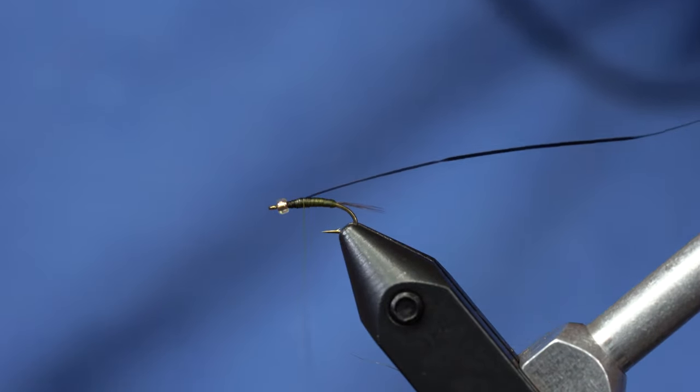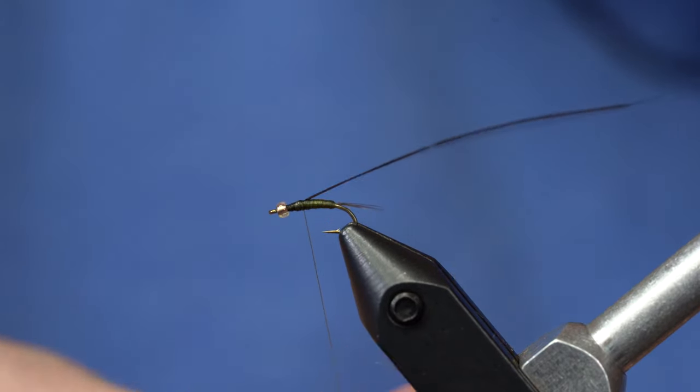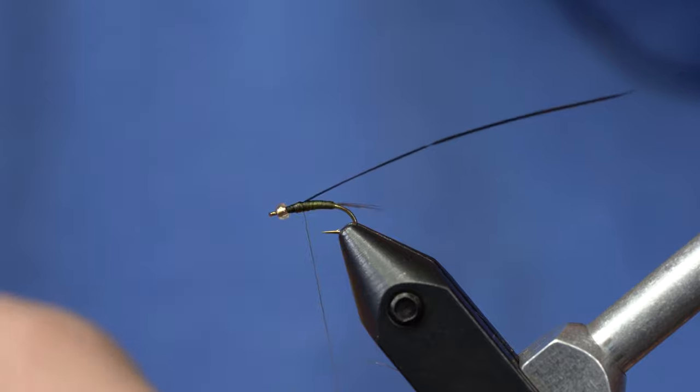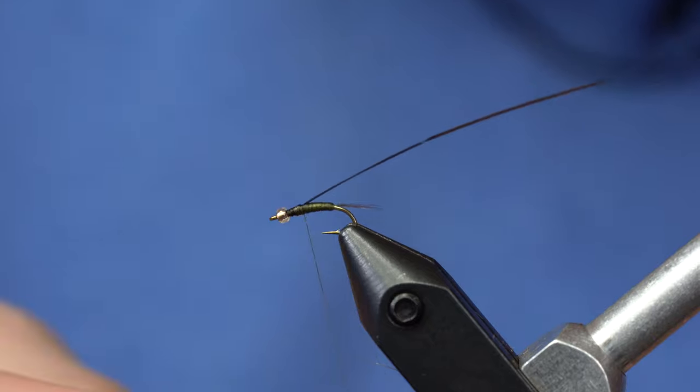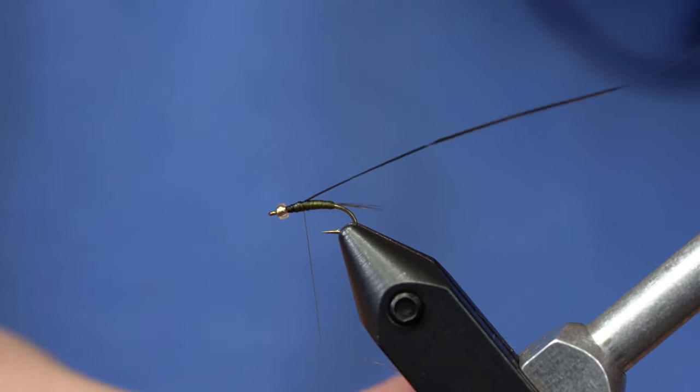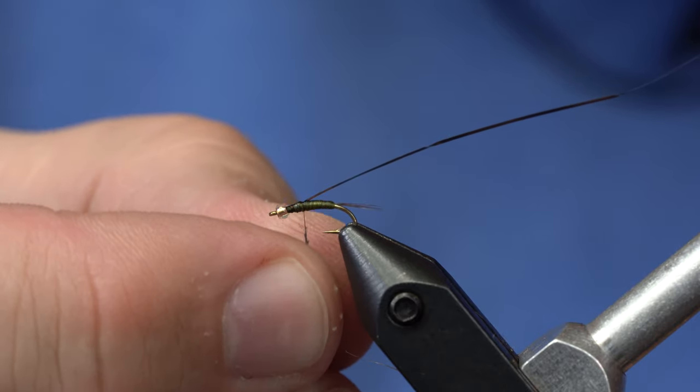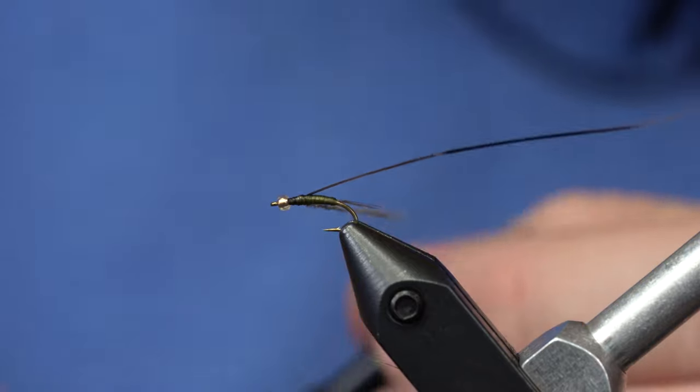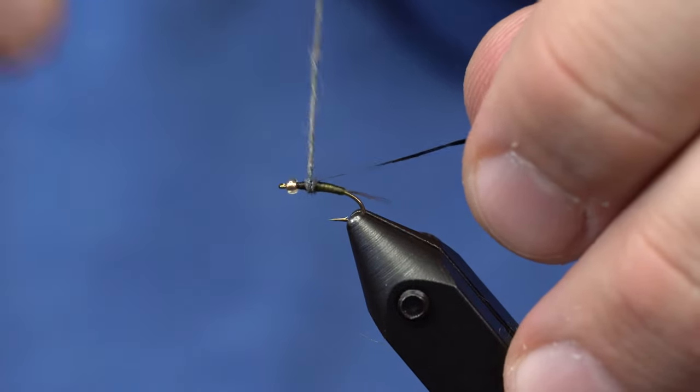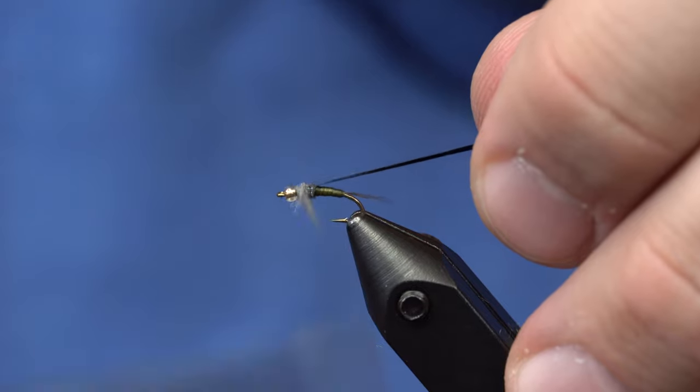Alright so I'm just going to take some SLF Bug Dub. It's a cool dubbing because it's a rabbit dub that has a little bit of flash mixed in. But you're also able to dub it down really tight. So as you can see I've got a tight little dubbing noodle.